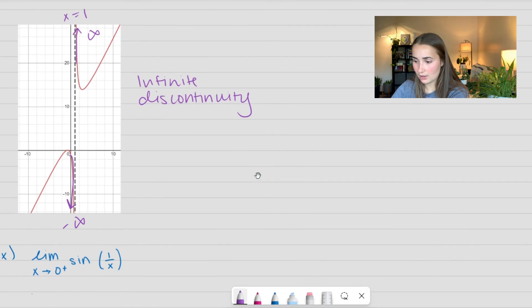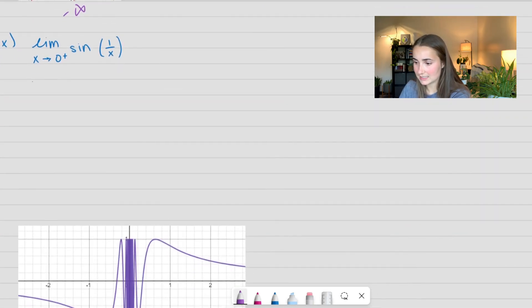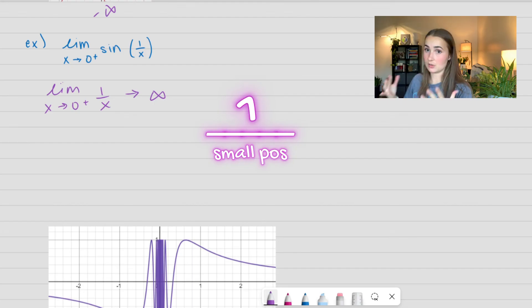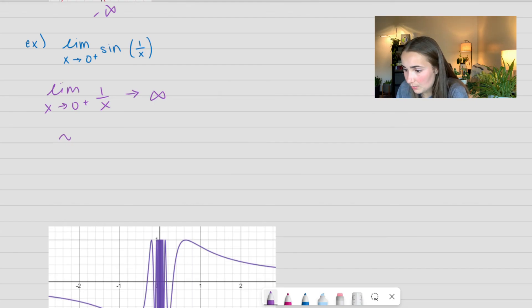We have another type of discontinuity to look at here. We have a limit as x approaches 0 from the right side of sine of 1 over x. If we remember, the limit as x approaches 0 from the right of 1 over x shoots up to positive infinity. 1 divided by a small positive number goes to infinity. So this is similar to the limit as y approaches positive infinity of sine of y.